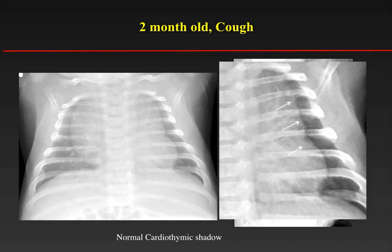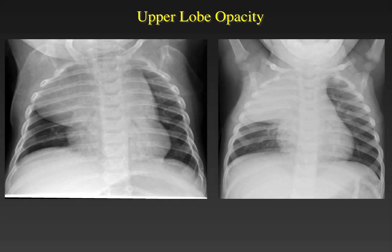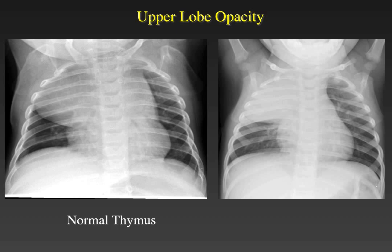I'll show four children with a right upper lobe opacity to illustrate how to tell the difference between a normal thymus and other pathology. In the first child, the thymus is well-defined, not displacing the trachea, and we can see through it to normal lung parenchyma — this is a normal thymus. In the second child, there is a right upper lobe density through which we cannot see lung, with a very well-defined minor fissure below. This is a child with pneumonia. Comparing them side by side, the differences in density are clear.